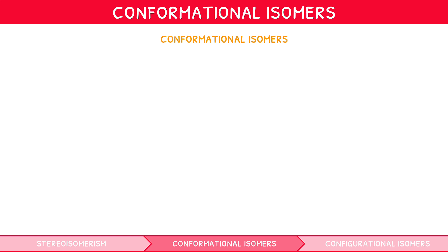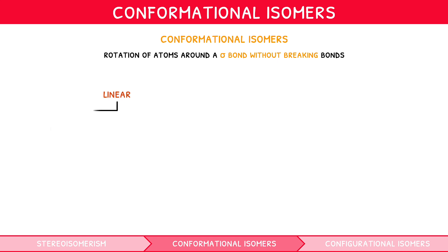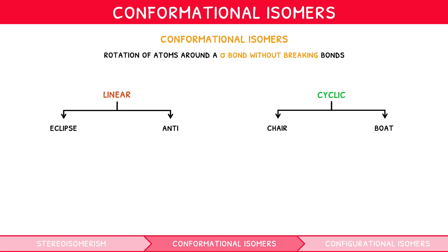Conformational isomers are created by rotation of groups around a sigma, i.e. single, bond, without breaking and reforming bonds. They come in two forms in linear compounds — eclipse and anti — and two forms in cyclic compounds: chair and boat.